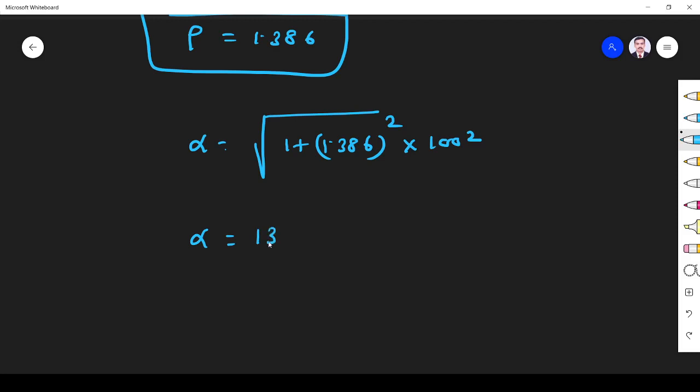If we simplify we get 138.6. So this is the image frequency rejection ratio. Since it is a ratio there is no unit. I hope you understand this concept and problem. If you have any doubt please ask me in the comment section. Thank you.